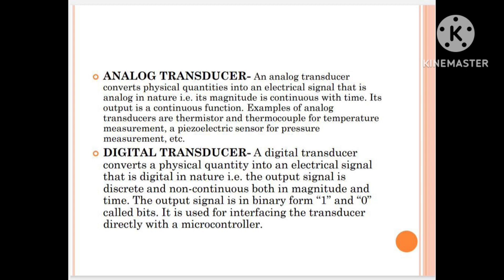A digital transducer converts a physical quantity into an electrical signal that is digital in nature. That is, the output signal is discrete and non-continuous both in magnitude and time. The output signal is in binary form, that is, 0 and 1 called bits. It is used for interfacing the transducer directly with a microcontroller.